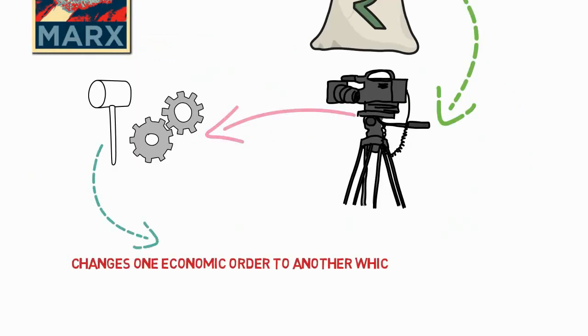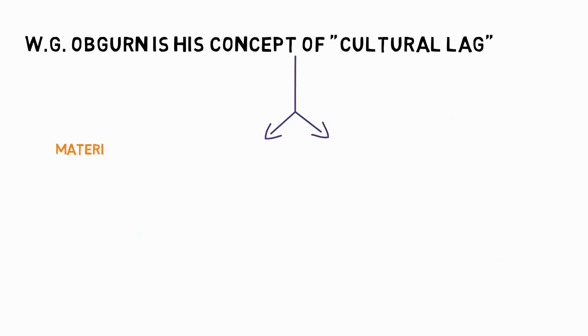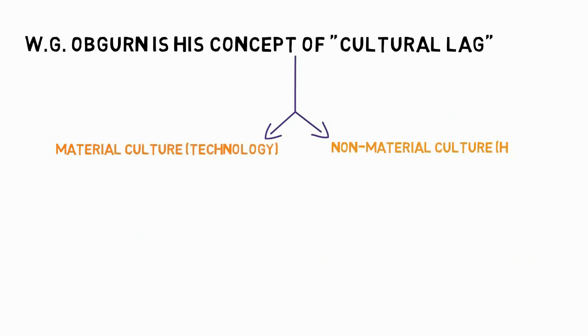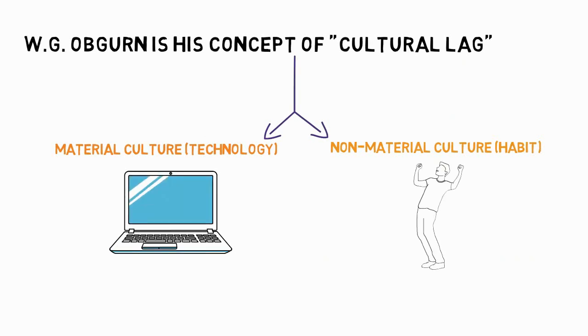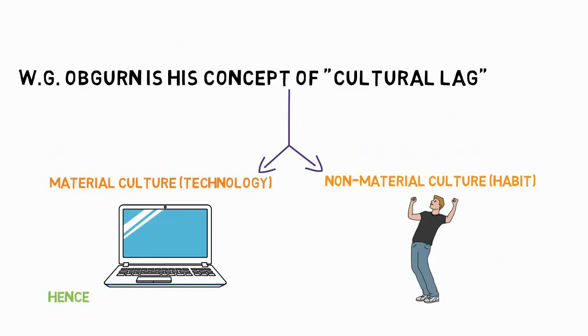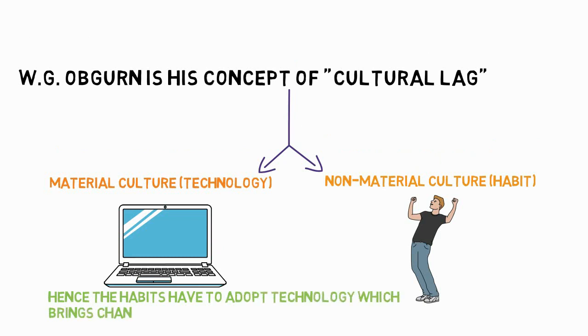W.G. Ogburn, in his concept of cultural lag, identified two types of culture: material culture, that is technology, and non-material culture, that is habits. He believes that material culture runs faster than non-material culture. Hence, habits have to adopt technology, which brings changes in society.